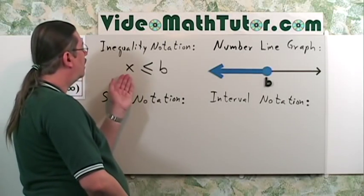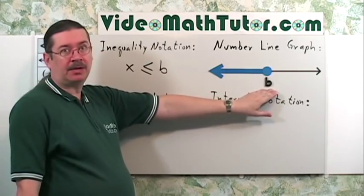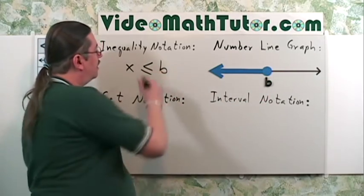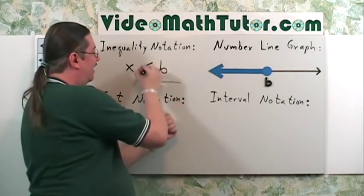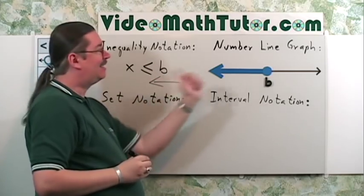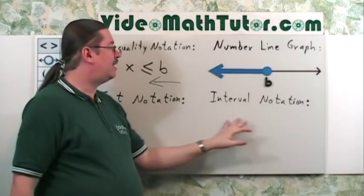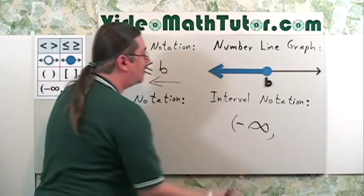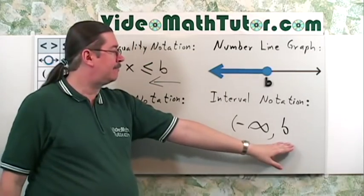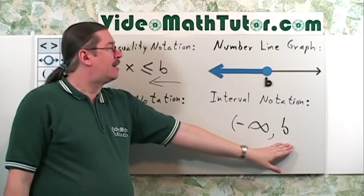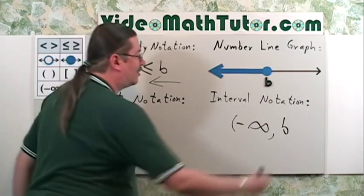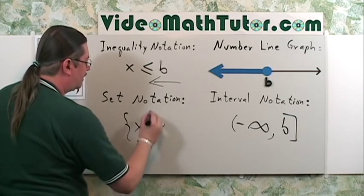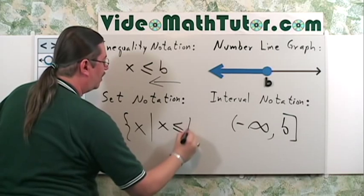Here's the second graph: x is less than or equal to b. Mark b on the number line. It's less than or equal to, so use a solid dot. Shade to the left. For interval notation, it goes from negative infinity to b — and since it's a solid dot, we use a square bracket at b. For set notation: the set of all x's such that x is less than or equal to b.